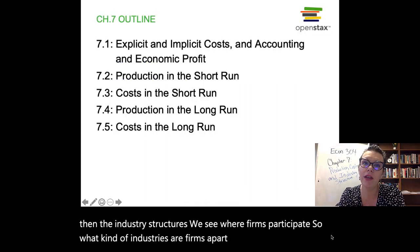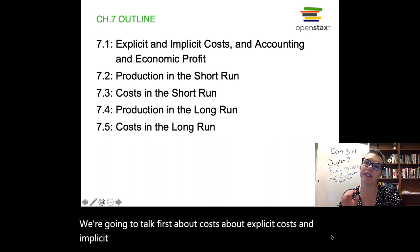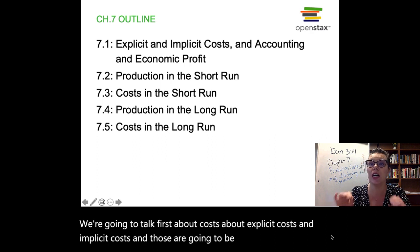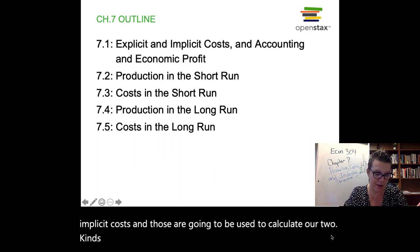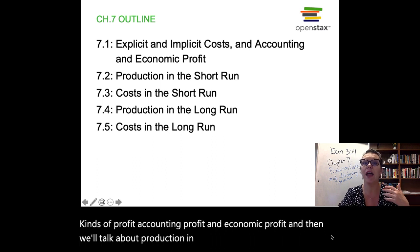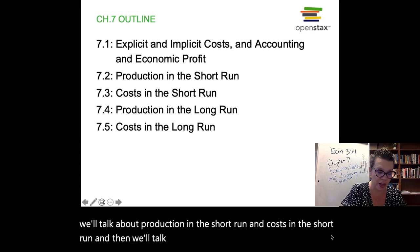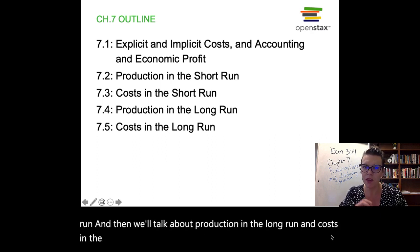Here's our outline. We're going to talk first about costs — about explicit costs and implicit costs — and those are going to be used to calculate our two kinds of profit: accounting profit and economic profit. Then we'll talk about production in the short run and costs in the short run, and then production in the long run and costs in the long run, and we'll talk about what those two terms mean.